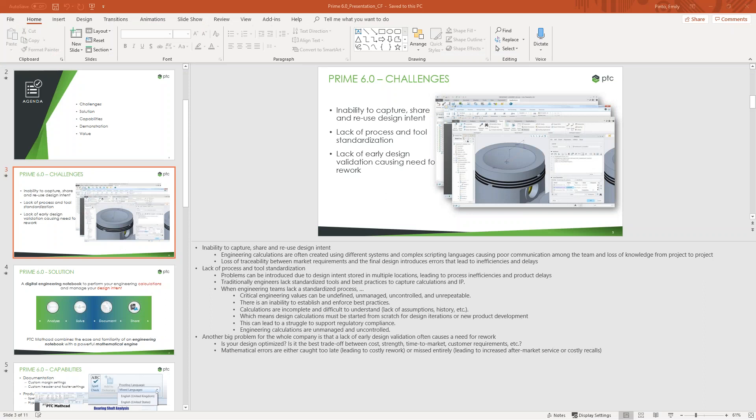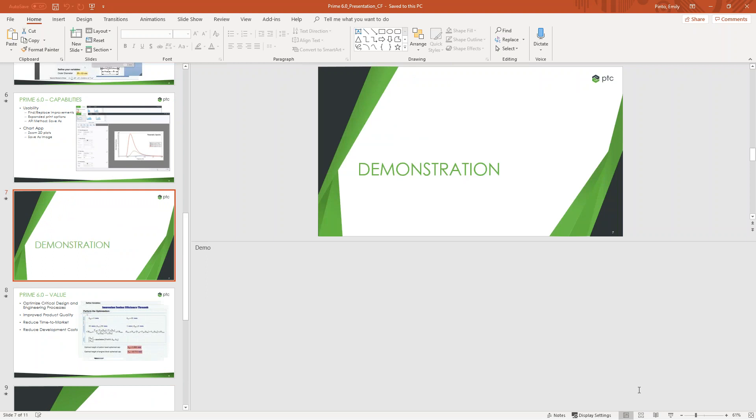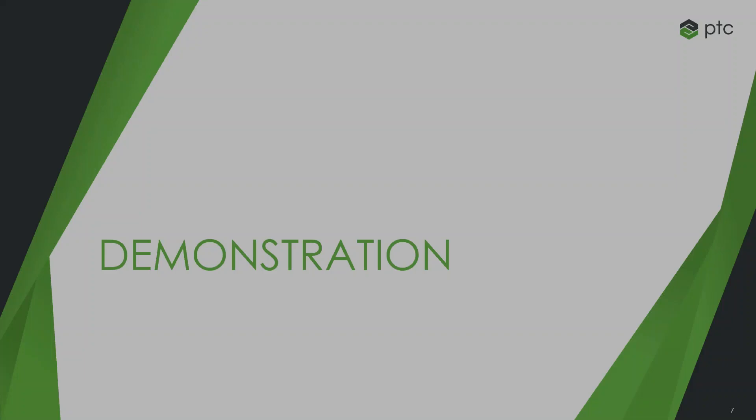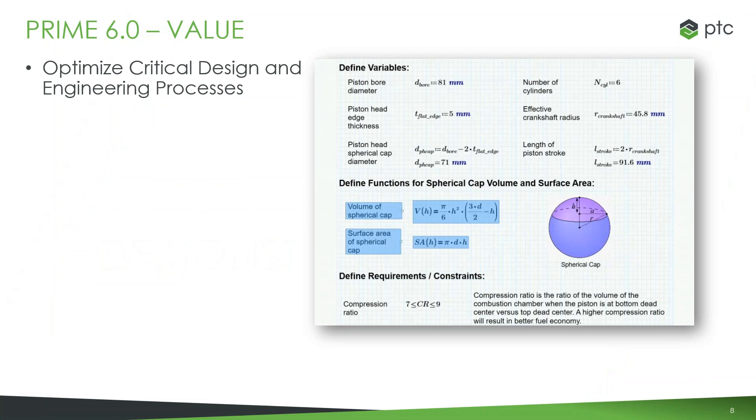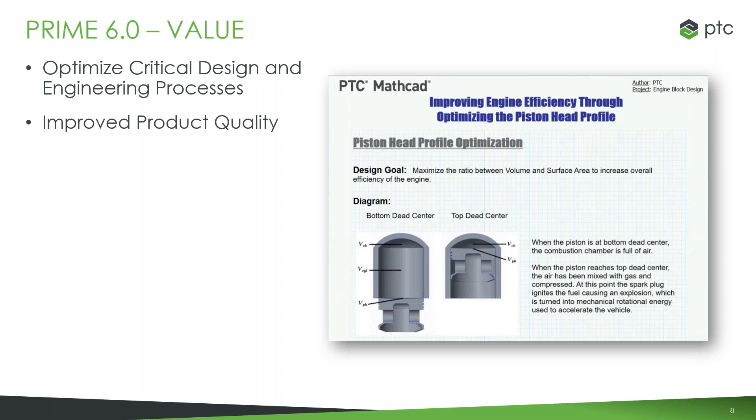So circling back to talk about a little bit of a recap of what we talked about. When we hear back from our customers, a lot of the value that they take away from MathCat Prime 6.0 is that MathCat allows them to optimize those critical design and engineering processes. Starting with clean, organized calculations in an easy-to-access, easy-to-share manner, easy-to-understand is really critical in optimizing and getting an efficient engineering process. This is going to lead to improved product quality because there aren't going to be as many errors. Nothing's going to be overlooked.